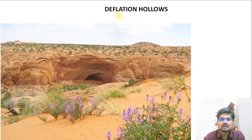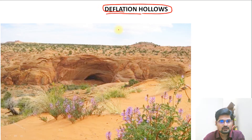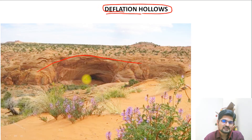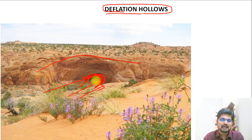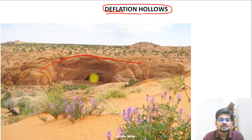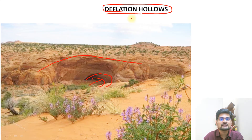The next feature is deflation hollows. Where wind has attacked a rock surface, gradual erosion creates a caving structure — the portion is deflated and a hollow is created in the rock. This is known as a deflation hollow.